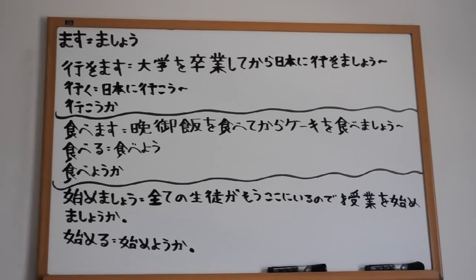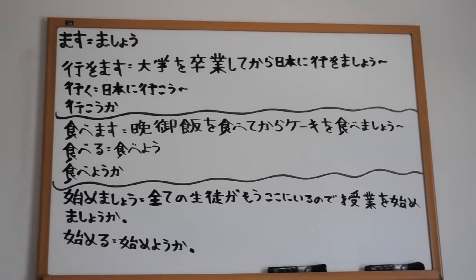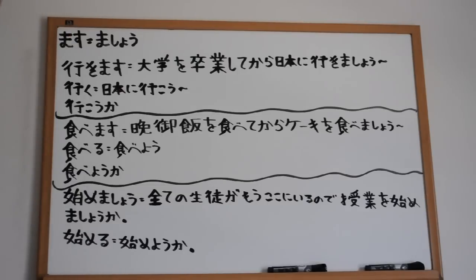Good day everyone. Today we have a video - Japanese. We're going to talk about the mashou form: let's do this, let's do that. This was actually a video request by a friend of mine named Eaton, from France I think. I had this on the board for a while - it's been almost a week. I just didn't have a chance to make the video for it.